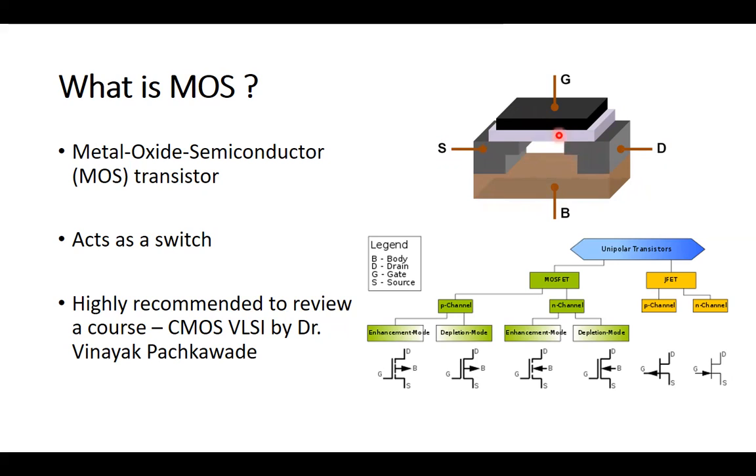you have N type or P type of semiconductors. On top of the semiconductor, you have oxide, which is silicon dioxide or silicon nitride, and on top of that, you have a metal, which can also be a polysilicon.